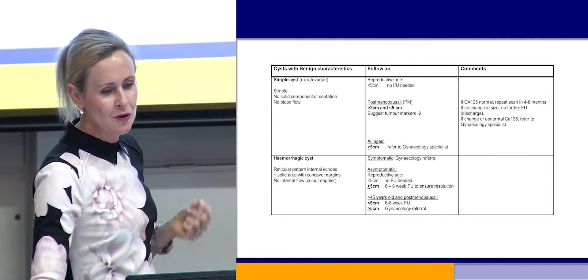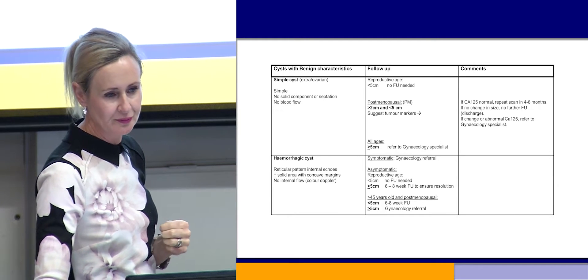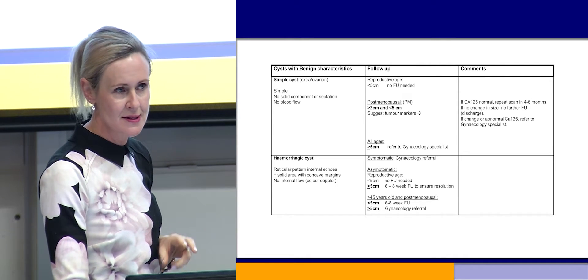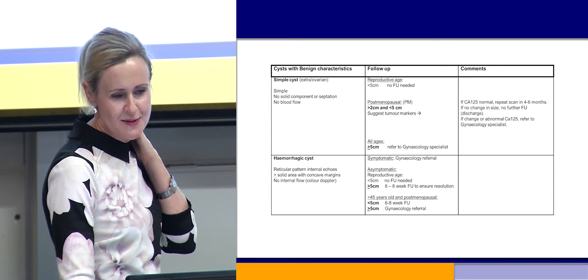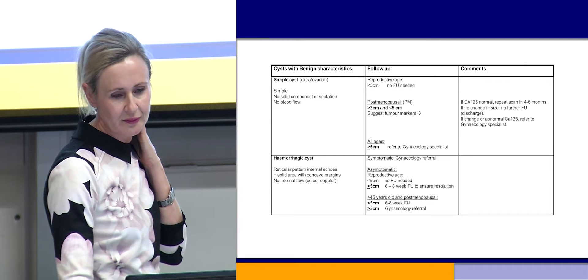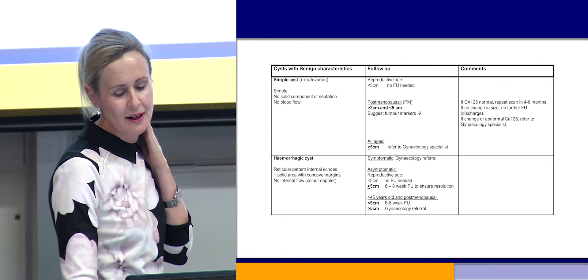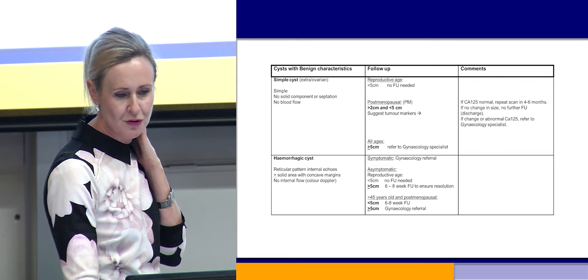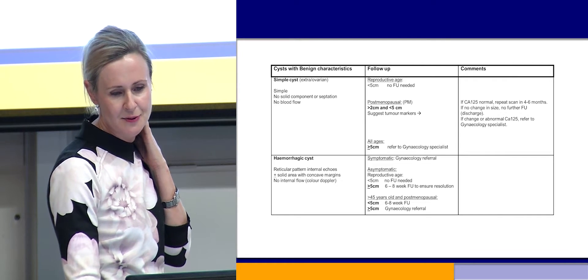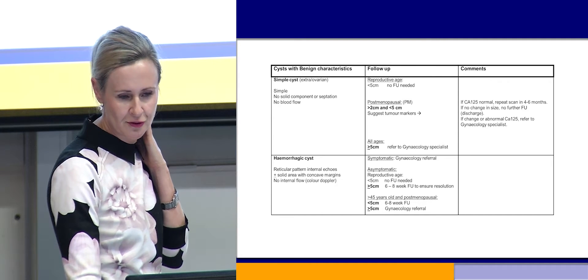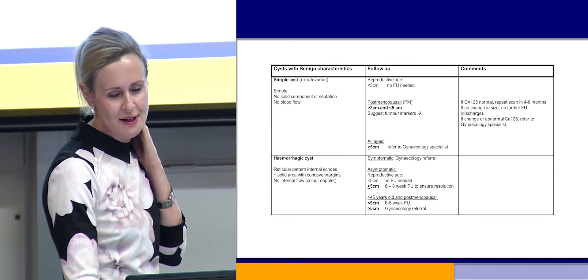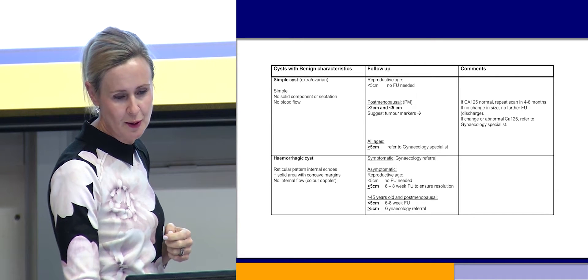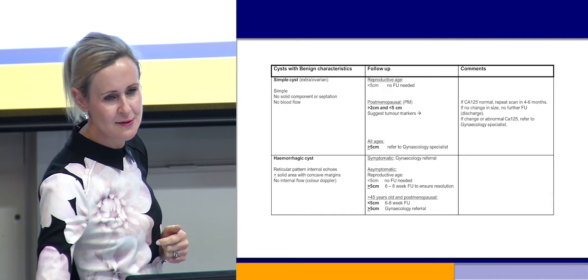All ages with a cyst greater than or equal to 5 centimetres is a guide for referral. For haemorrhagic cysts — which have a characteristic reticular pattern of internal echo and can sometimes have a small solid area but no blood flow — if symptomatic, refer to the gynaecologist. If asymptomatic in a reproductive age group and less than 5 centimetres, no follow-up needed. If greater than or equal to 5 centimetres, a repeat scan in 6 to 8 weeks to ensure resolution, and if unresolved then refer. Women over 45 and postmenopausal women with haemorrhagic cysts less than 5 centimetres could have 6 to 8 week follow-up, and greater than 5 centimetres needs referral.